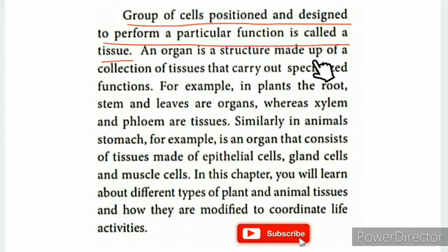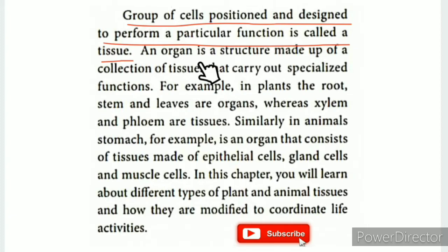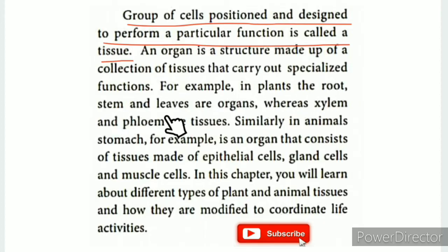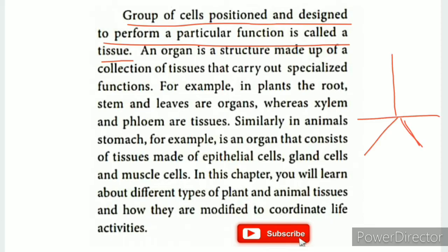An organ is a structure made up of a collection of tissues that carry out a specialized function. For example, the stomach is an organ — it is a collection of tissues performing a function. In plants, the root, stem, and leaves are organs.